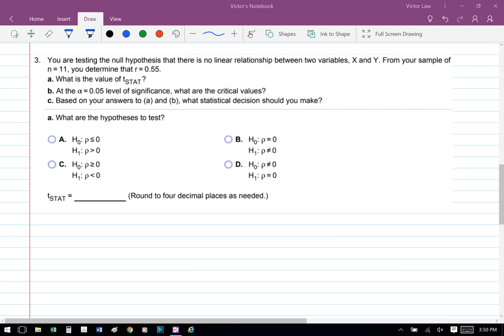You are testing the null hypothesis that there is no linear relationship between two variables x and y. From your sample of n equals 11, you determined that r equals 0.55, so r here is your sample correlation.